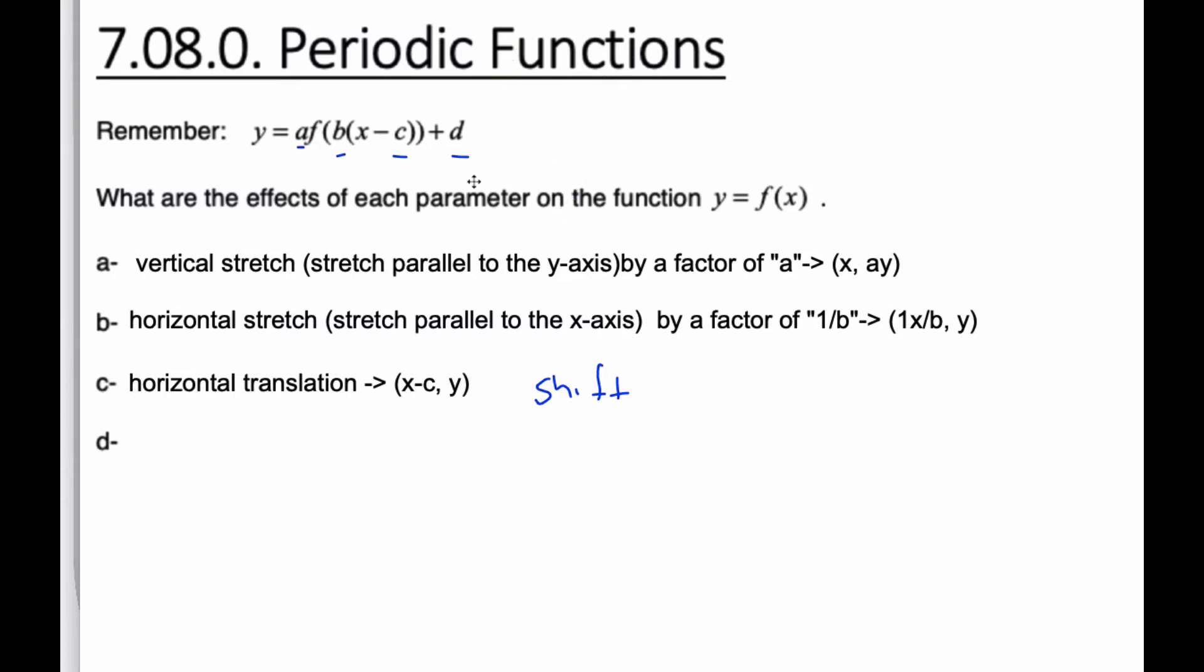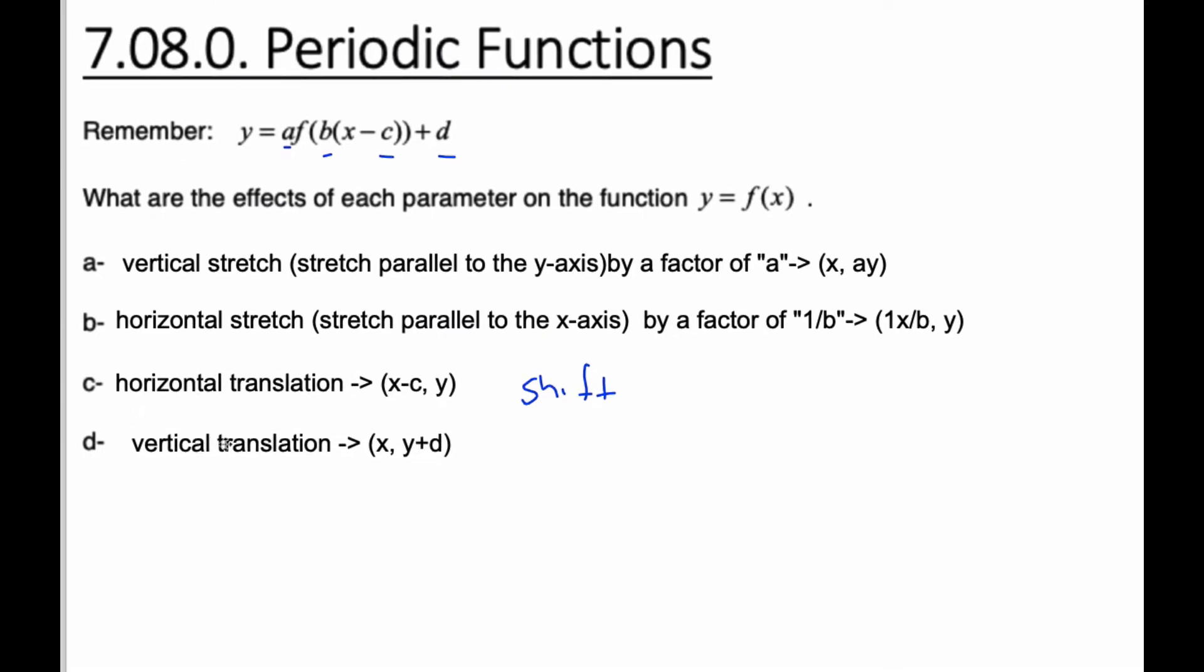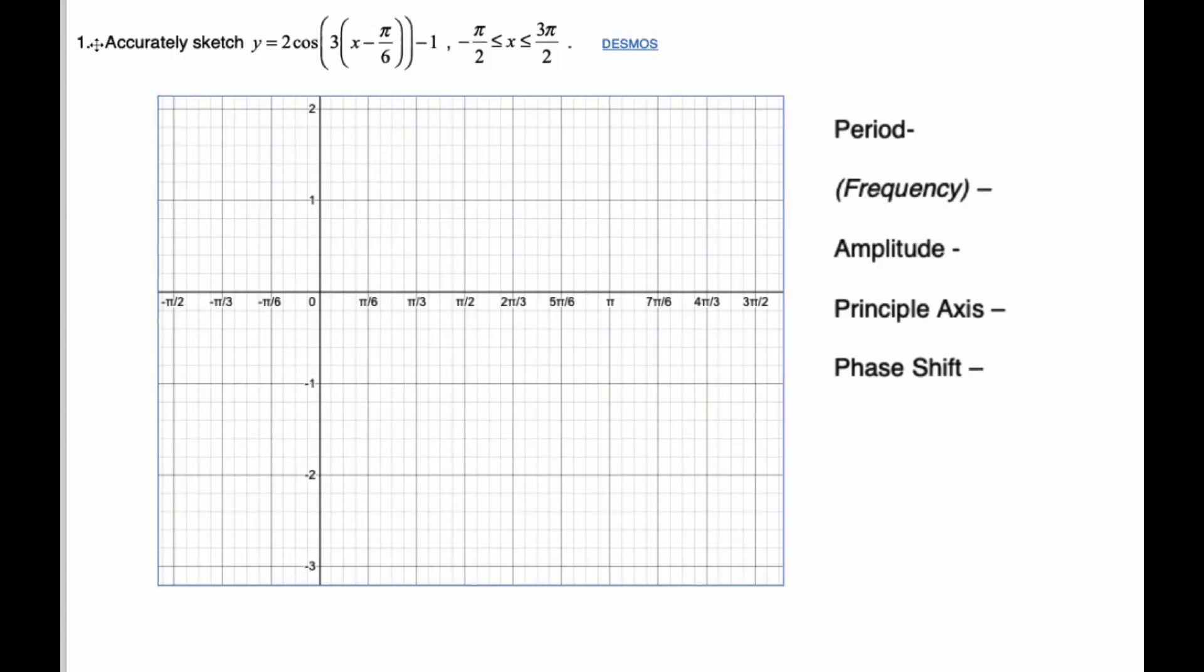And finally, the last one is d, which often I feel is the easiest one. d is here, and that is our vertical translation. It is the y value. It just gets d added to it, and it just moves it upward or down. All right, so those are our review of our parameters, a, b, c, and d.